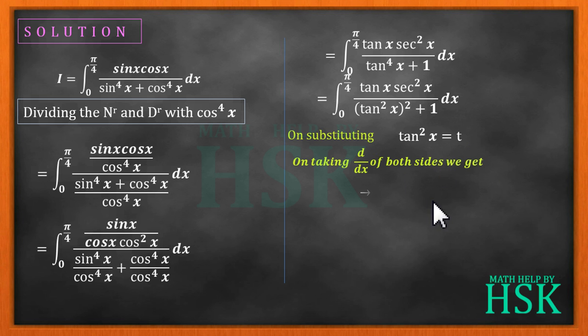Substituting tan square x equals t, differentiating both sides with respect to x, I'm going to get tan x sec square x dx equals 1 by 2 dt. So for tan x sec square x dx, I'm going to write 1 by 2 dt, and here I'm going to get t square. The limits are also going to change: upper limit becomes tan square pi by 4, which equals 1, and lower limit equals tan square 0, which is 0.